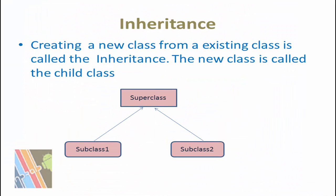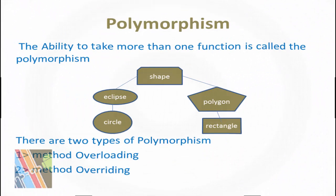What is inheritance? Creating a new class from an existing class is called inheritance. The new class is called the child class or derived class. What is polymorphism? The ability to take more than one form is called polymorphism. There are two types: method overloading and method overriding. For example, a circle is a special case of an ellipse — it fulfills all the properties of an ellipse. Similarly, a rectangle is a special case of a polygon, so it fulfills all the properties of a polygon. We will see all the OOP properties — encapsulation, abstraction, inheritance, and polymorphism — in Java programming step by step.